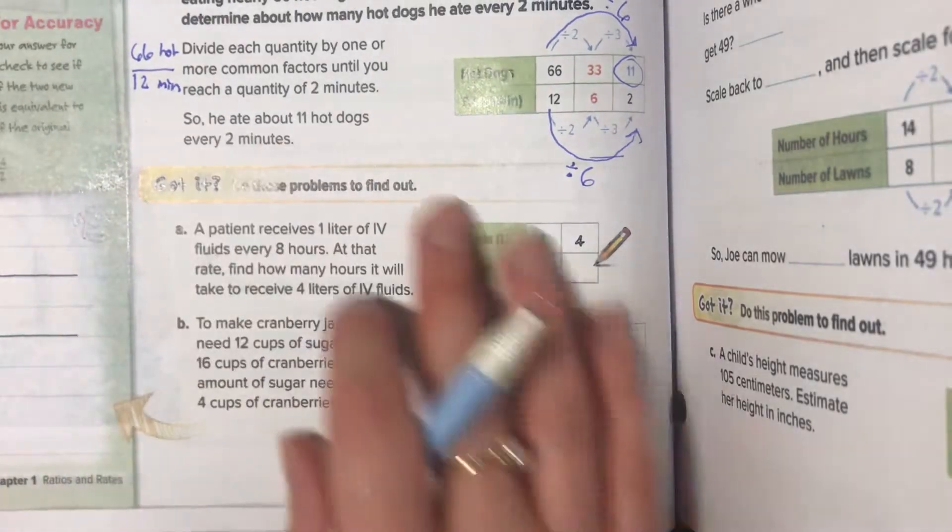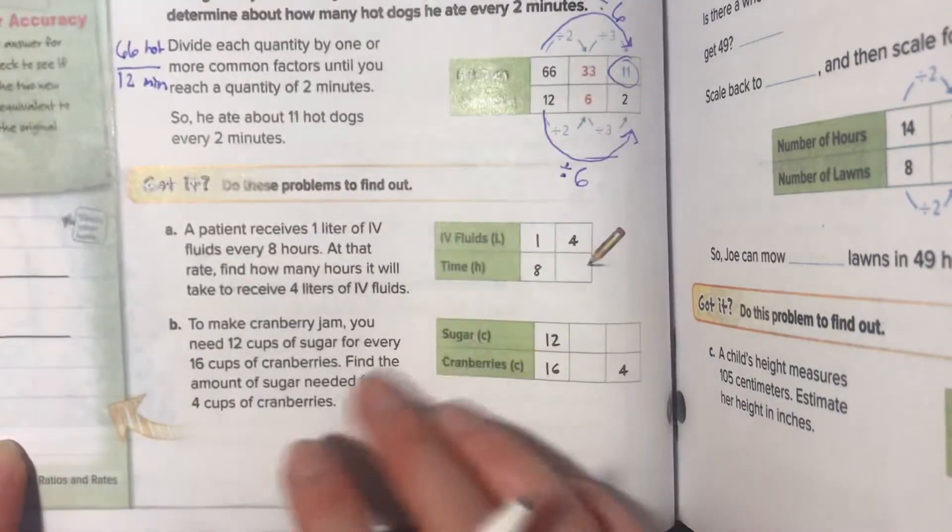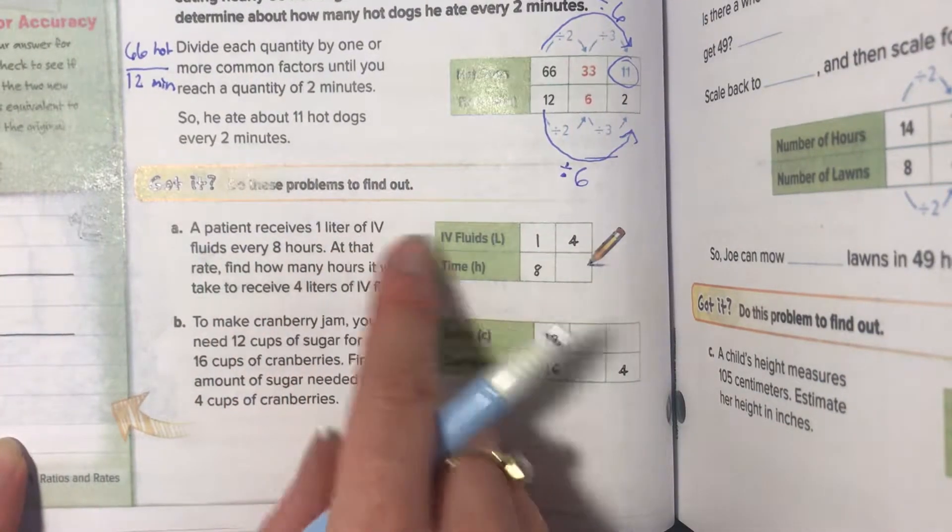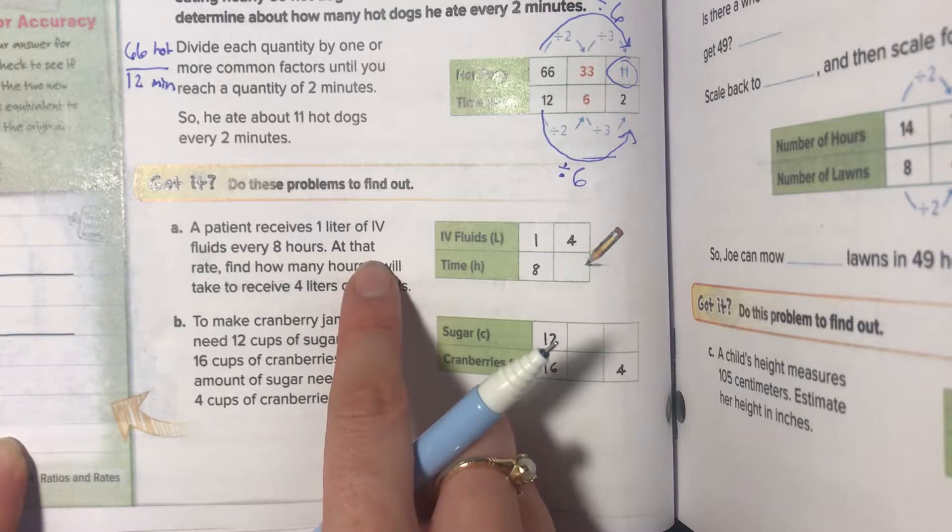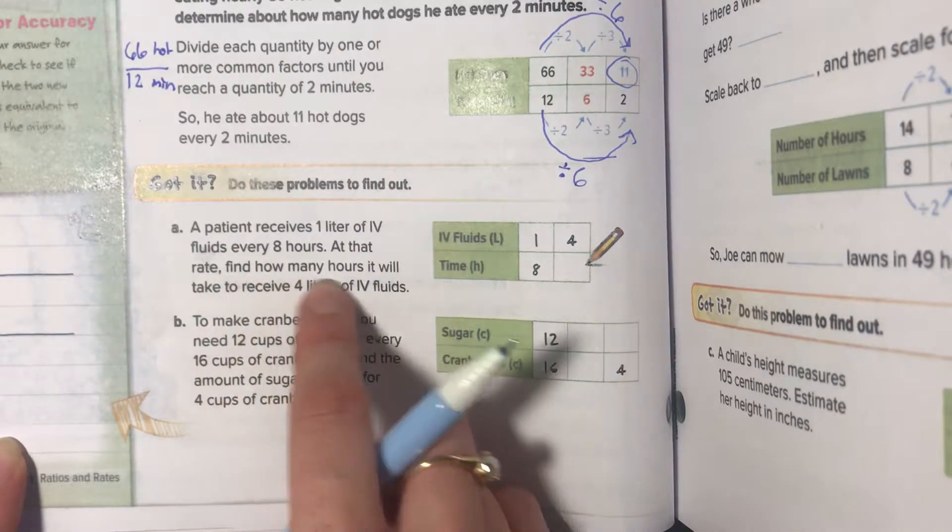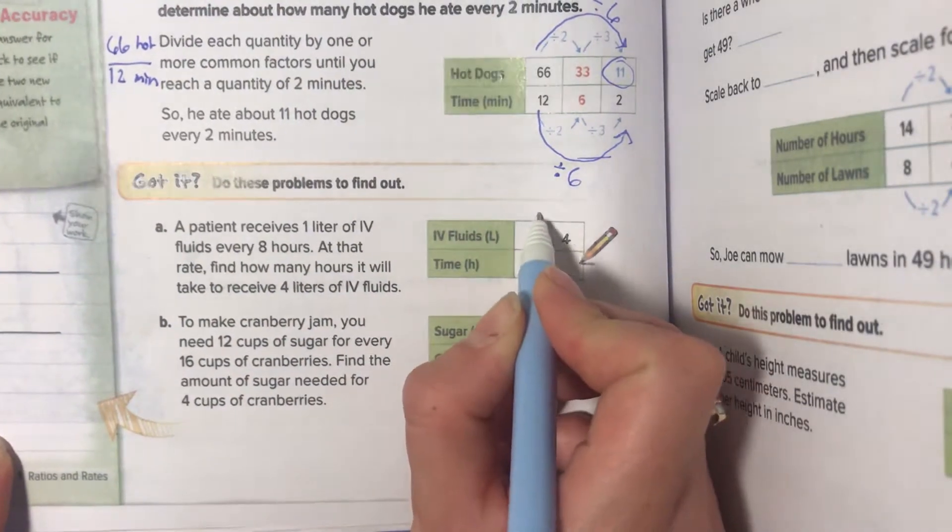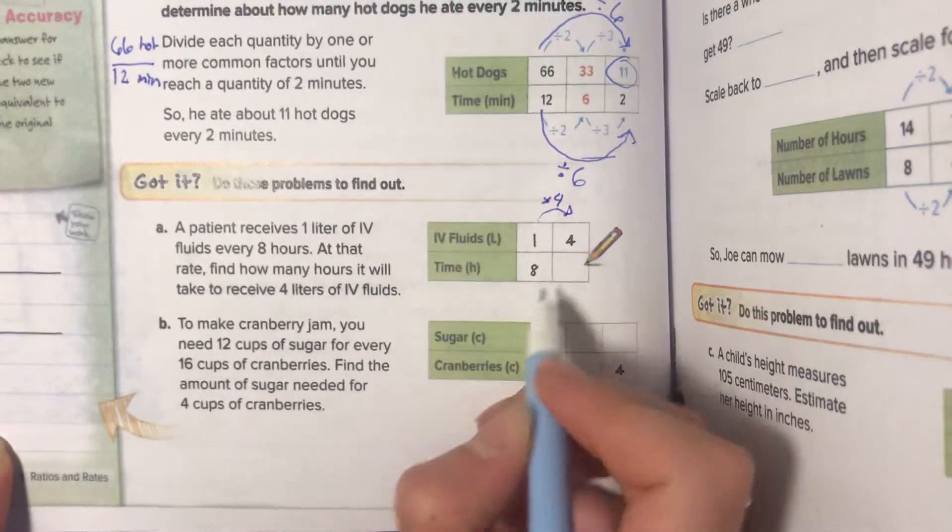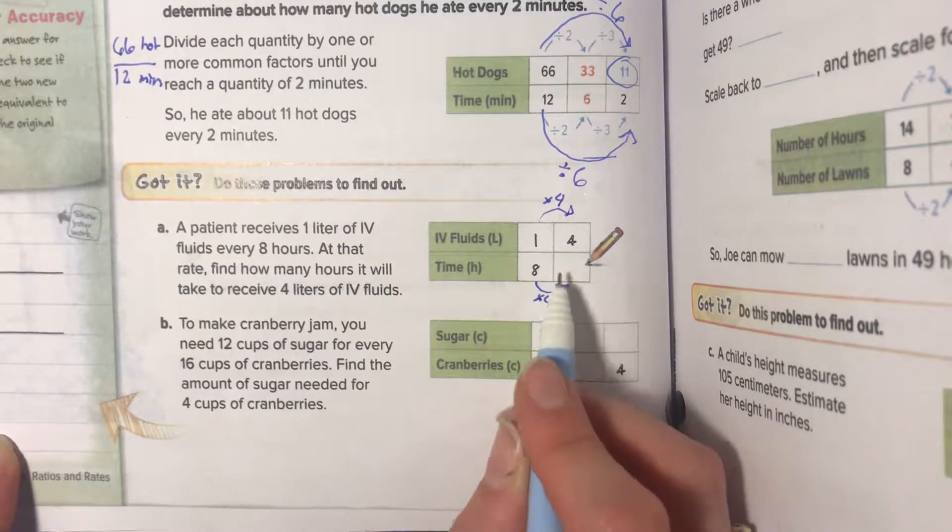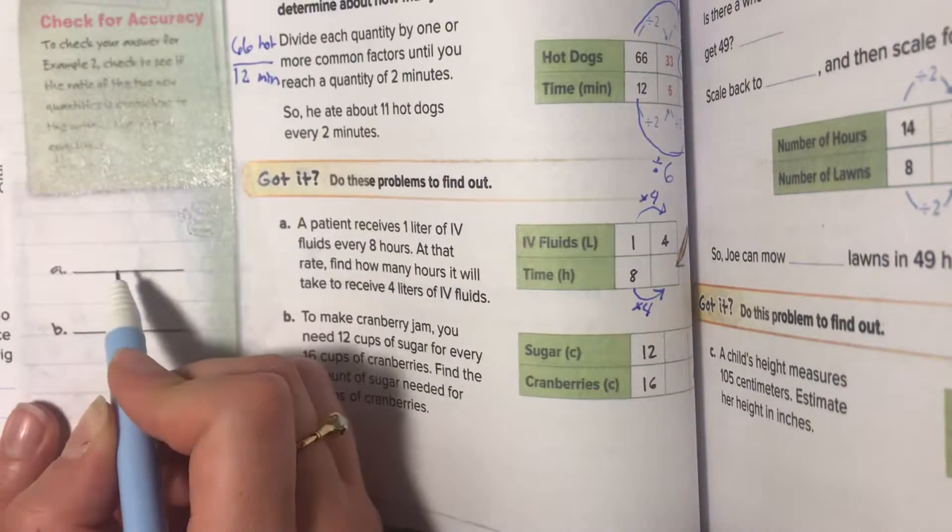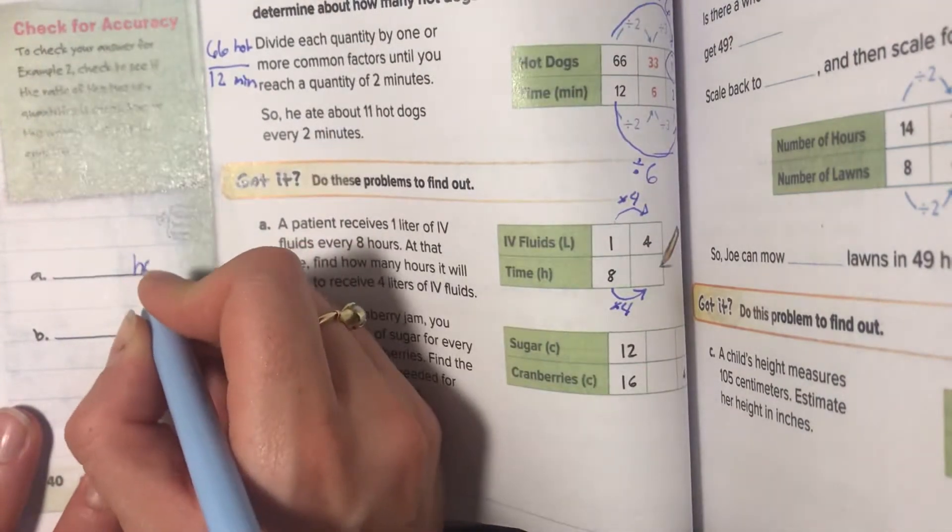Now these are the times where you're going to do this on your own. A patient receives one liter of IV every eight hours. At that rate, find how many hours it will take to receive four liters. So they went up to four, so they've multiplied by four. So you need to do the same here to find what this answer is. Write it in here, but also write it over in A, and make sure you label it your units. How many hours? So hours, it should be hours.